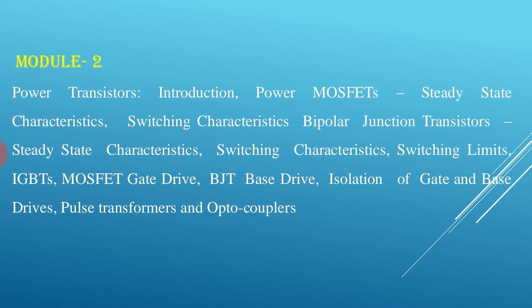Next is the power transistor module. Here we study different transistors including internalized transistors, DGT, bipolar junction transistors, and IGBT — insulated gate bipolar transistors. Under this module we are going to study the steady-state characteristics and switching characteristics.